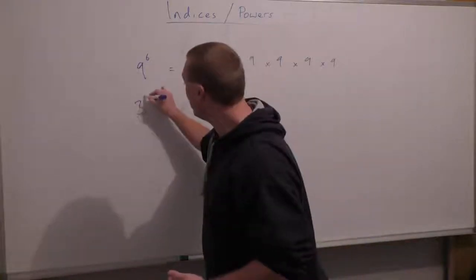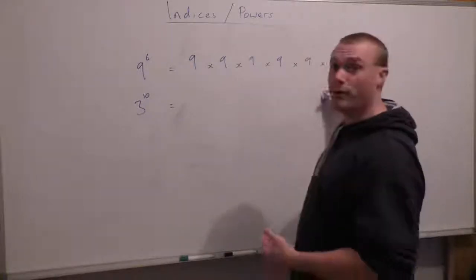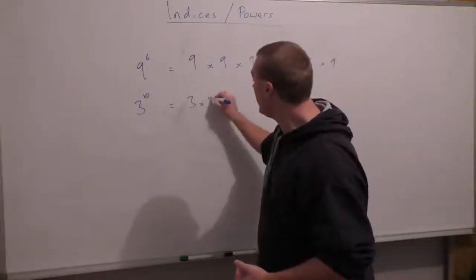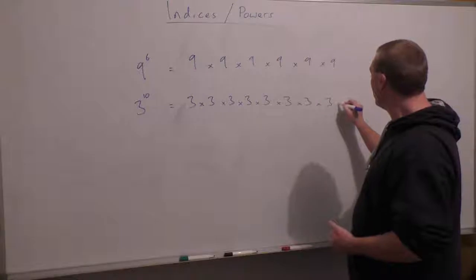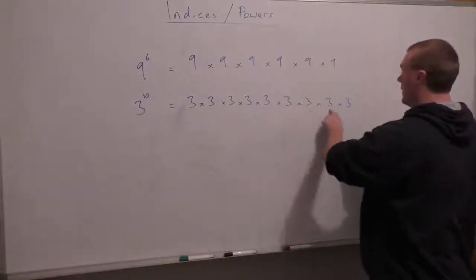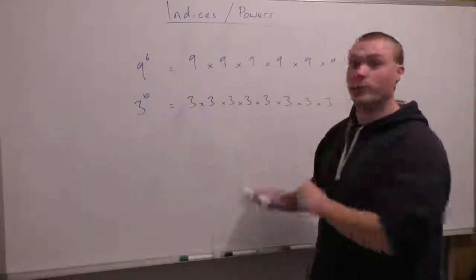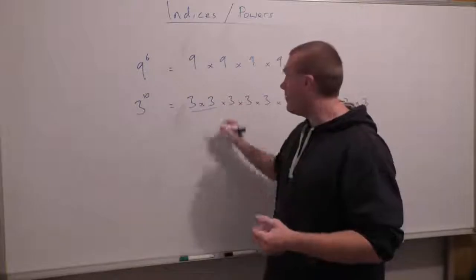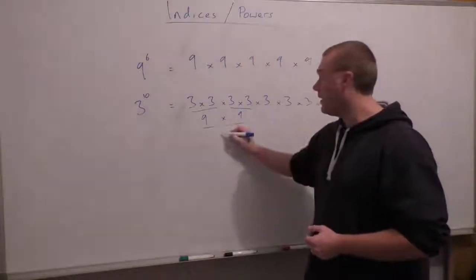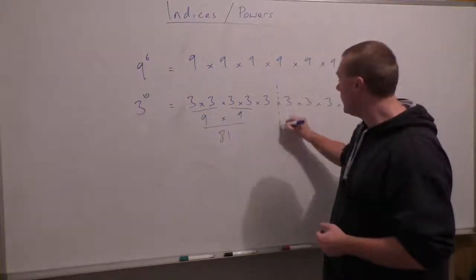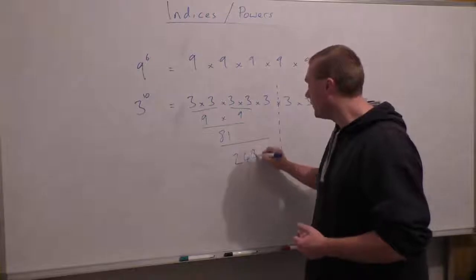If you've got something like 3 to the power of 10 and you actually want to work it out without a calculator, it's often easier to write it out as 3 times 3 times 3 times 3 times 3 times 3 times 3 times 3 times 3 times 3 — ten 3s — and then work it out. With multiplication, we can do the numbers in any order. So 3 times 3 gives me 9, and 3 times 3 gives me another 9. Then 9 times 9 gives me 81. Drawing a dotted line, 81 times the remaining 3 gives us 243.